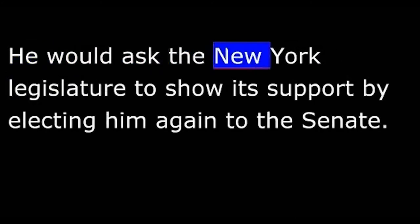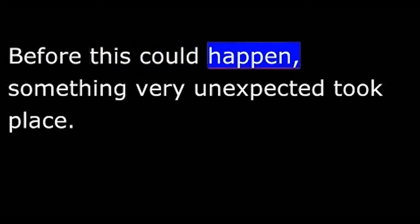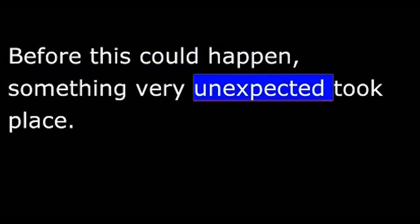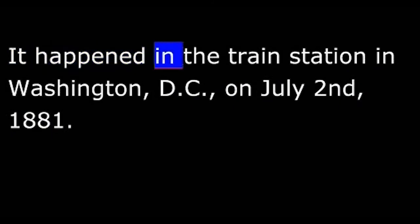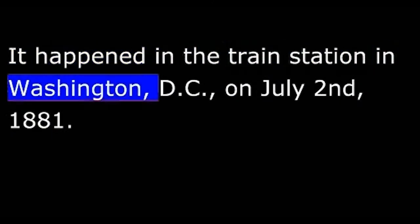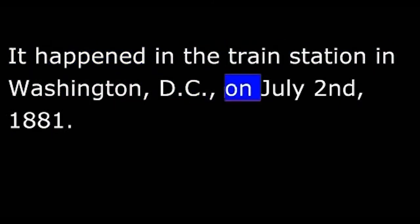Conkling decided to resign in protest. He would ask the New York legislature to show its support by electing him again to the Senate. Before this could happen, something very unexpected took place. It happened in the train station in Washington, D.C. On July 2, 1881, a man ran up to President Garfield, pulled out a gun, and fired twice.